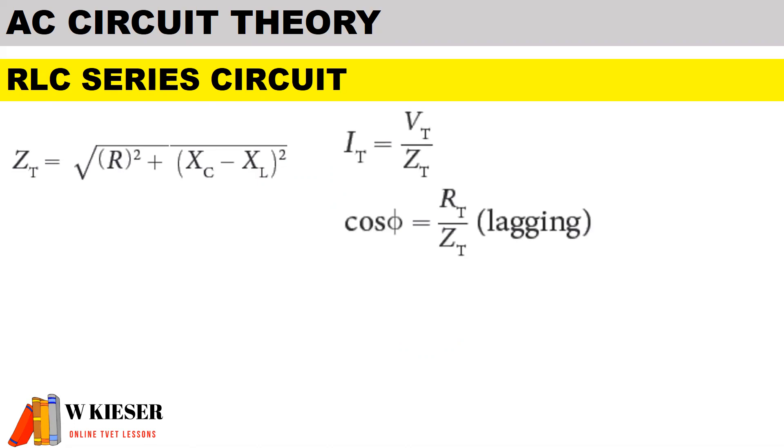To calculate the total current, remember a series circuit current remains the same, therefore it's V total over impedance total. To determine the power factor for a series RLC circuit it is R total over impedance total.